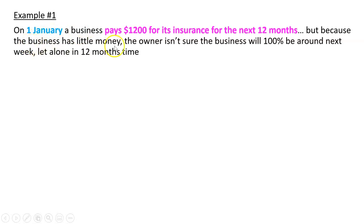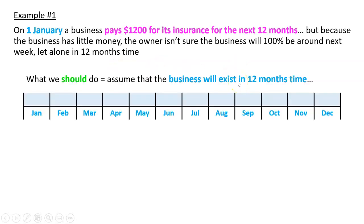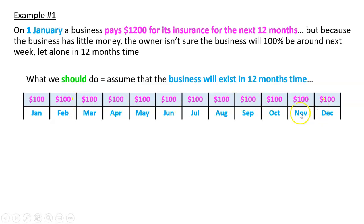Because the business has little money, the owner isn't sure the business will 100% be around next week, let alone in 12 months' time. So here's what we should do. We're going to assume the business will exist not only for the next 12 months, but forever. So we've got this $1,200 of insurance for 12 months — that's going to be $100 a month: $100 expense in January, February, March, and so on for the rest of the year. That makes sense.